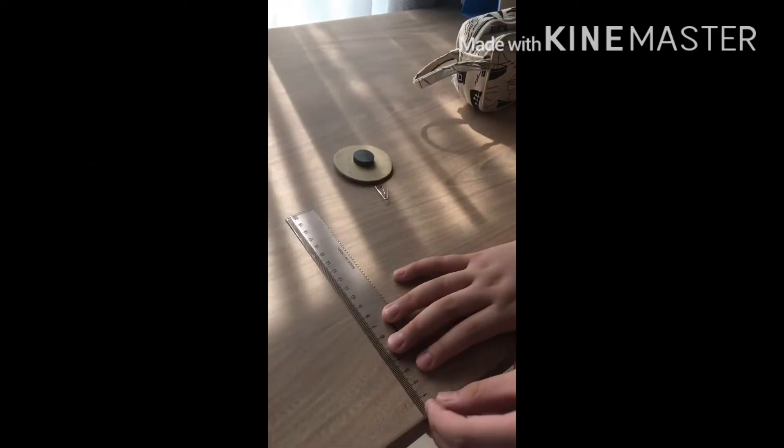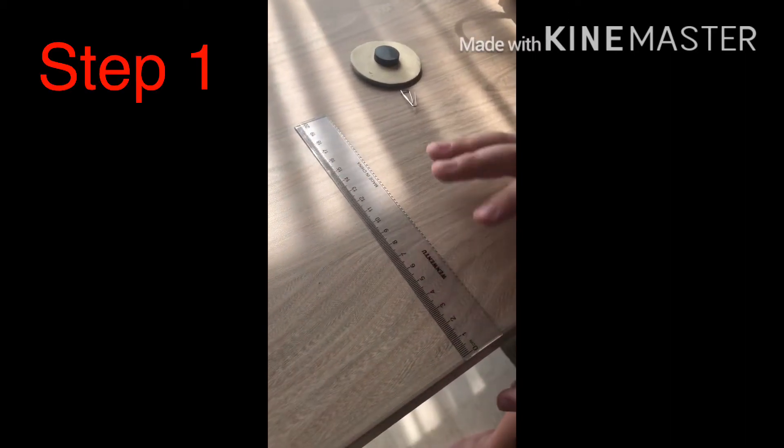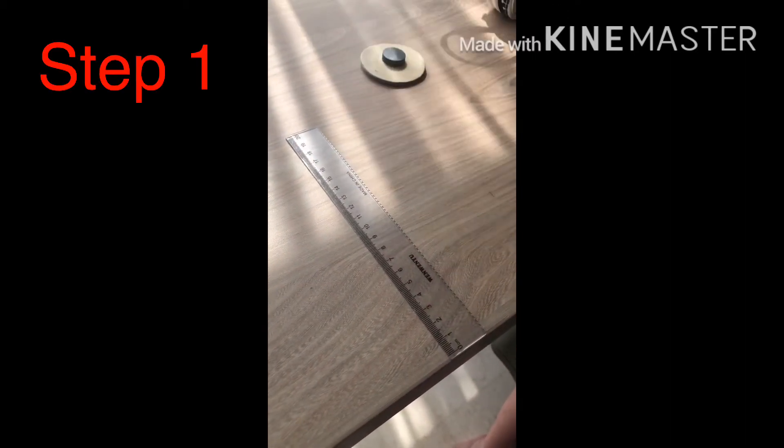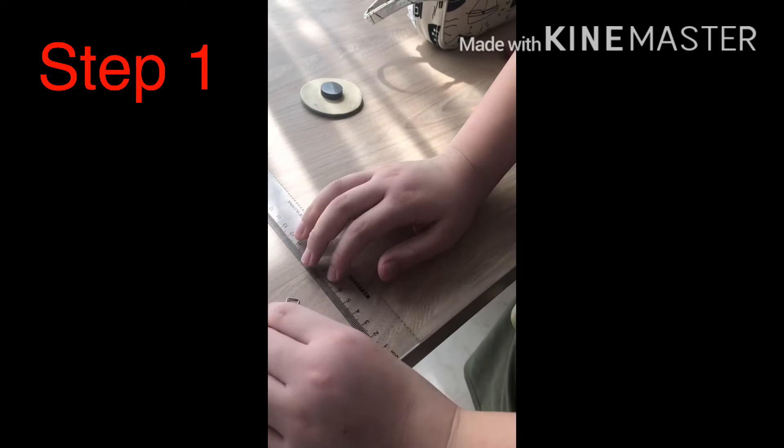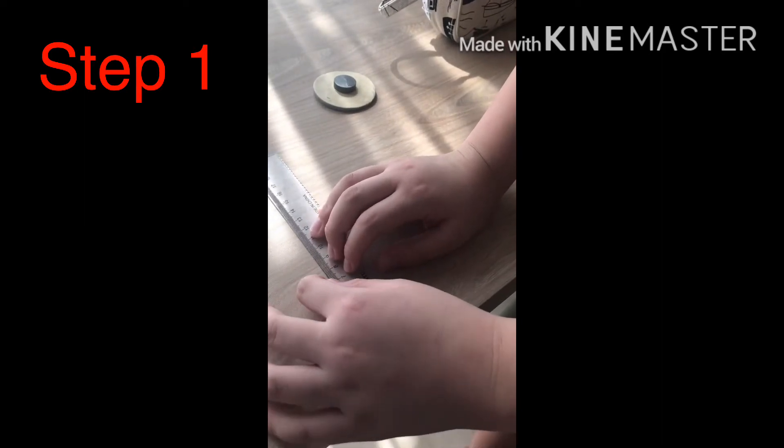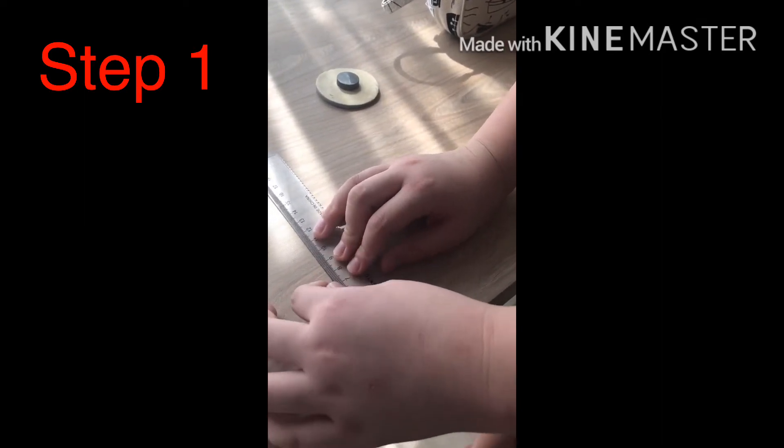So this is how you're going to do it. Step one: you put the paperclip onto number seven. By the way, the ruler must be more than seven centimeters.